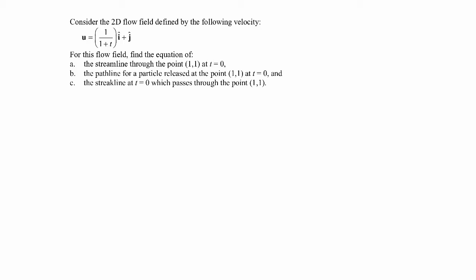In this example, we're told that we have a two-dimensional flow field given by the following velocity field. You can see it's unsteady, which means that in general the streamline, streak line, and path line will all be different. We're asked to find the equations for the streamline, path line, and streak line. So let's go ahead and get straight into it.